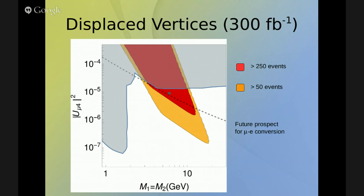Using this formula, we find the region of parameter space that leads to displaced vertices. The red region has more than 250 Higgs decays into a heavy neutrino giving a displaced vertex at the LHC with 300 inverse femtobarns. The orange region gives more than 50 events. The dashed line shows the future prospect for mu-e conversion.